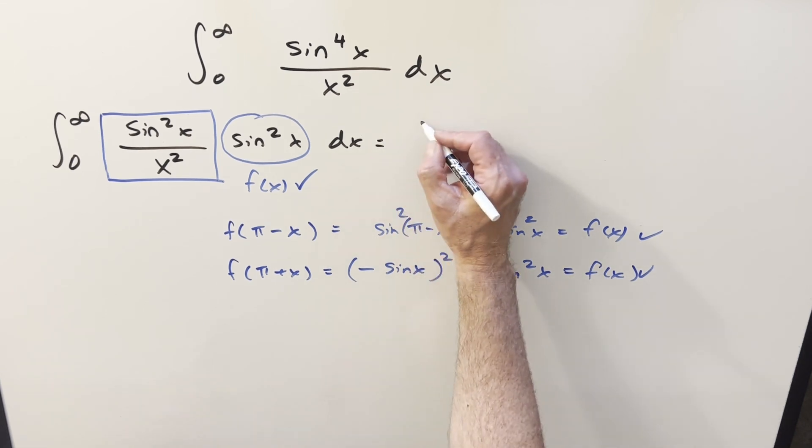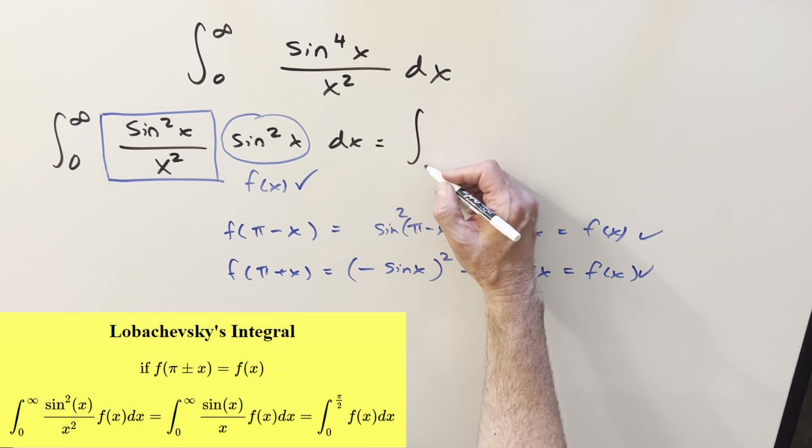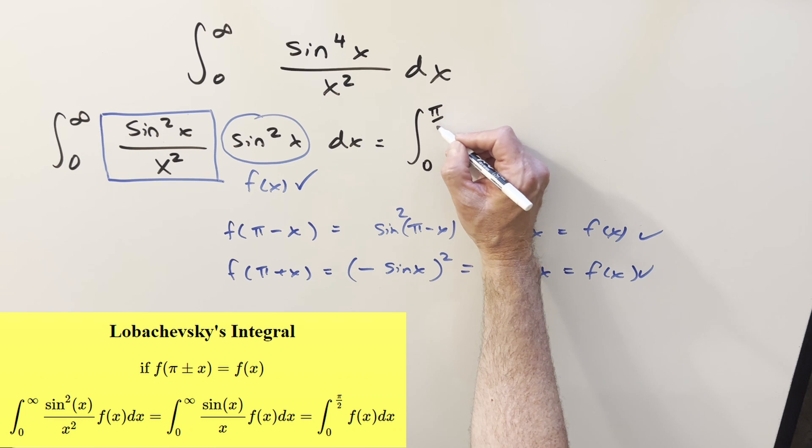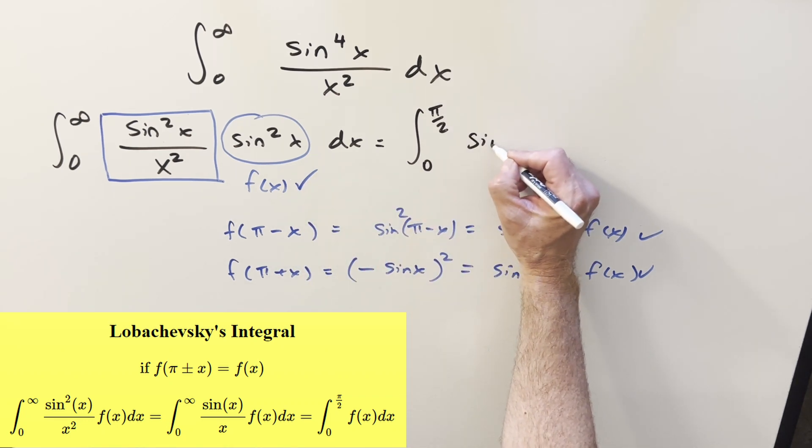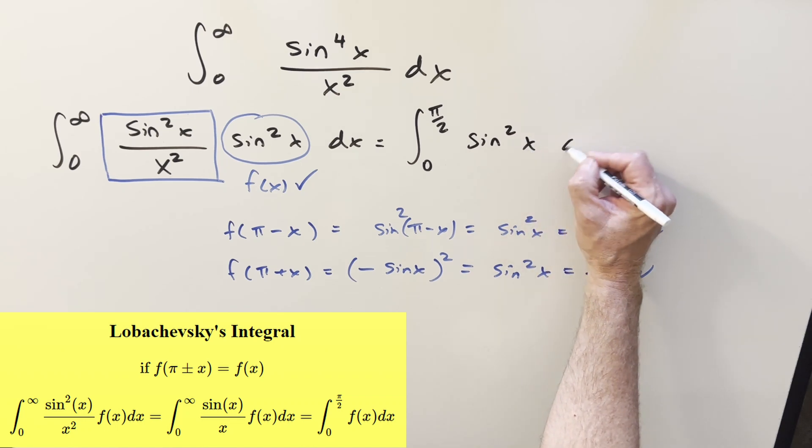What this is going to allow me to do is just rewrite this. The bounds change. They go from zero to infinity. Now that we're just integrating from zero to pi over two, and we just have our f of x, which is going to be pretty easy to deal with. We just need to integrate sine squared x dx.